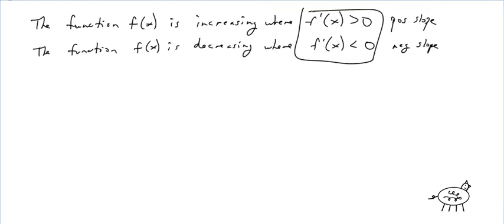Alright. So, let's just, I want to do just one example here. And then you're kind of good to go with increasing and decreasing. Okay, f(x) equals 6x squared minus x to the fourth.